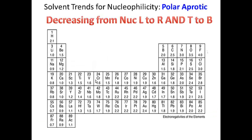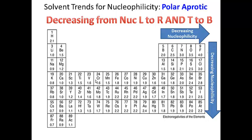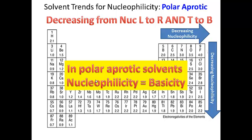For polar aprotic solvents, the trend remains the same as before: nucleophilicity decreases going from left to right and from top to bottom. Going left to right, we think about electronegativity; going top to bottom, we think about the basicity of the nucleophile. In a polar aprotic solvent, we can say that nucleophilicity roughly parallels basicity — the more basic, the more nucleophilic; the less basic, the less nucleophilic.